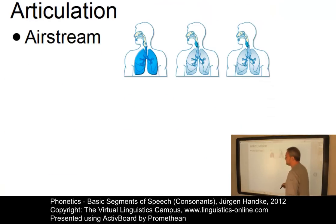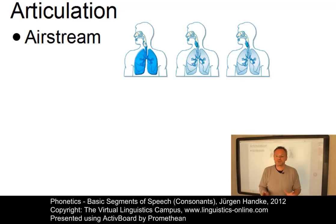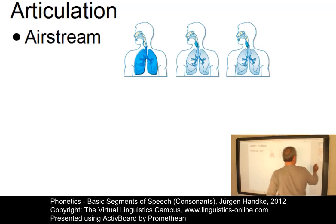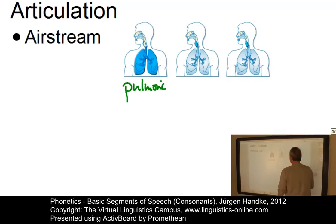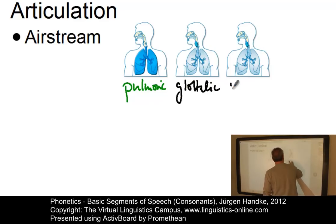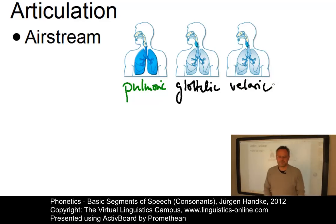A further criterion concerns the type of airstream involved. In this unit, we will concentrate on those consonants that are produced with a pulmonic airstream. We will not look at consonants produced with a glottalic or with a velaric airstream. These types of airstreams will be discussed separately.